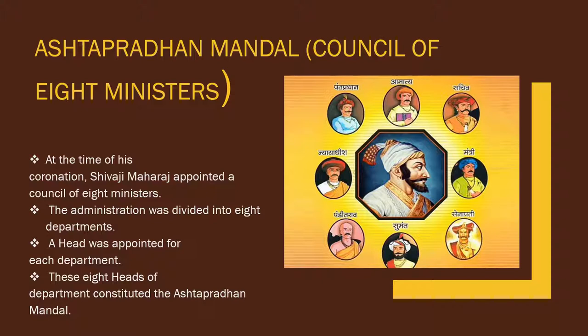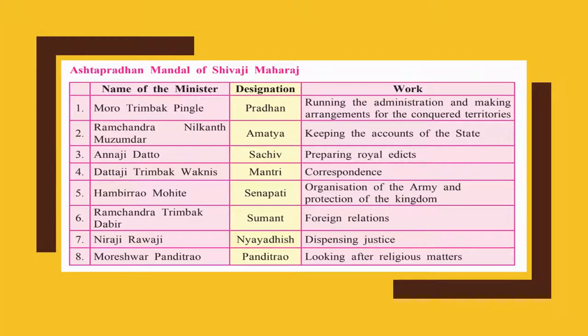Now let us look at the names of the Ashtapradhan Mandal ministers, their designations, and their work. The first minister was Moro Trimbak Pingale, who was the Pradhan. His work was running the administration and making arrangements for conquered territories — appointing administrators, looking after administration, and deploying armies in captured regions.